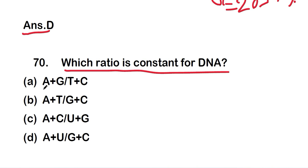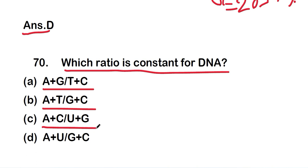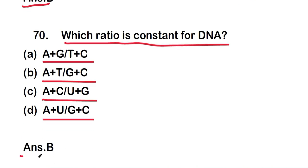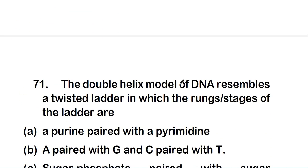Question 70: which ratio is constant for DNA? Option A, adenine + guanine to thymine + cytosine; option B, adenine + thymine to guanine + cytosine; option C, adenine + cytosine to uracil + guanine; or option D, adenine + uracil to guanine + cytosine. The right answer is option B — adenine + thymine to guanine + cytosine.